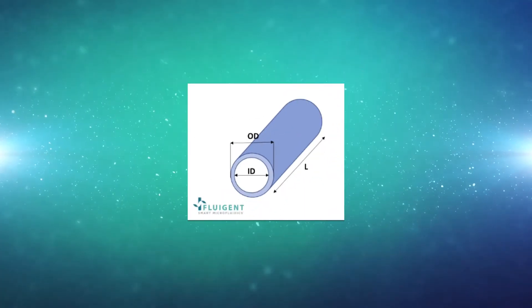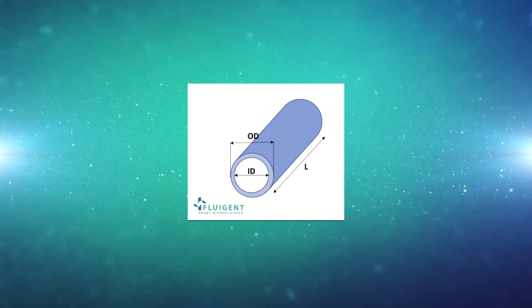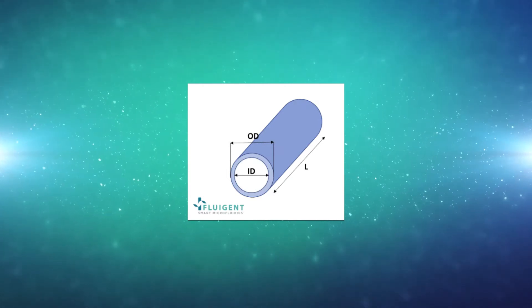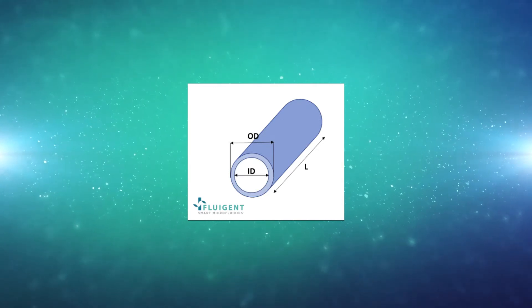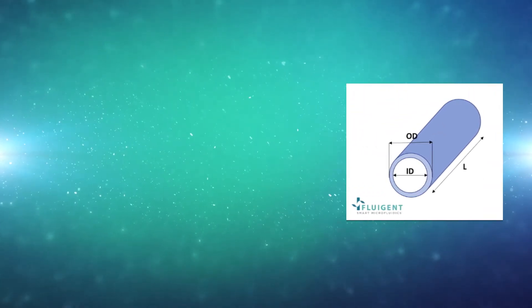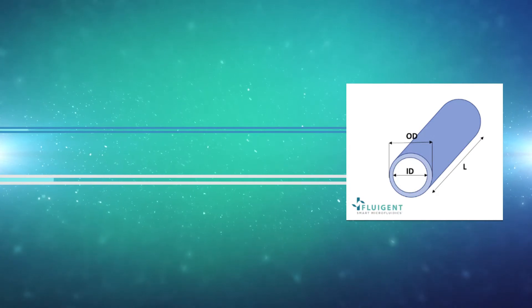When selecting your tubing, you should become familiar with the tubing dimensions influence. OD means outer diameter. ID means inner diameter, diameter of the fluidic path where fluid flows.